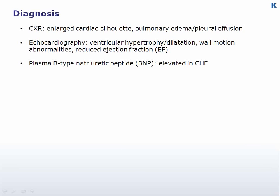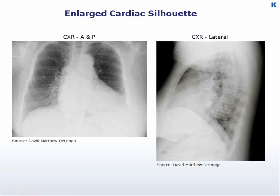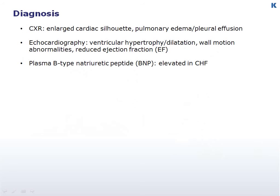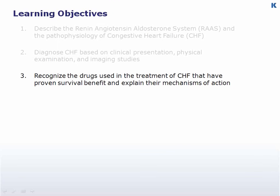When diagnosing CHF, a chest x-ray may show enlarged cardiac silhouette and the presence of pulmonary edema or pleural effusions. But echocardiography is more accurate and can delineate the anatomy and function of the cardiac chambers and valves. In particular, the left ventricular ejection fraction may decrease well below normal, which is 55 to 65 percent. Finally, measurement of plasma B-type natriuretic peptide, or BNP, released by the cardiac ventricles is elevated in CHF.